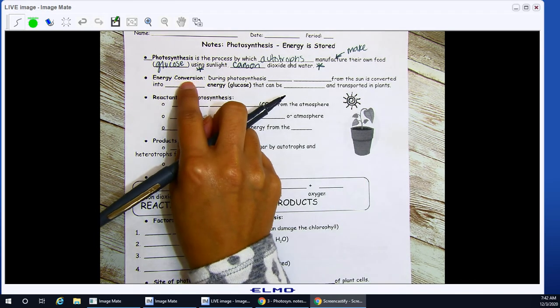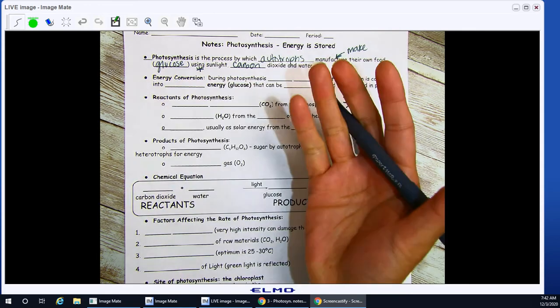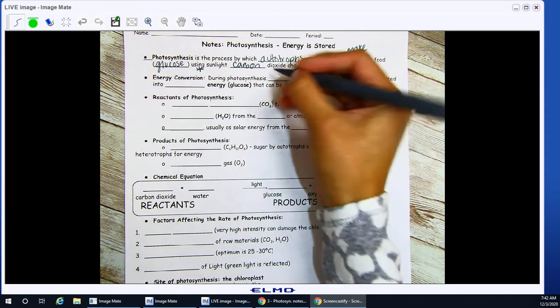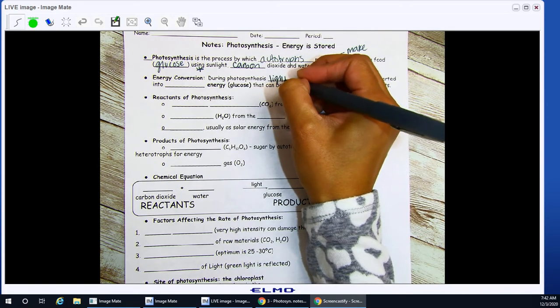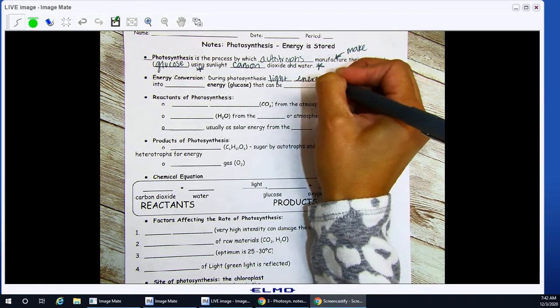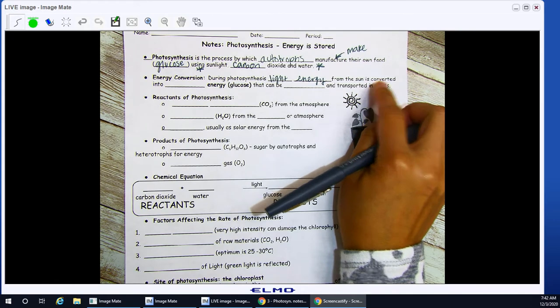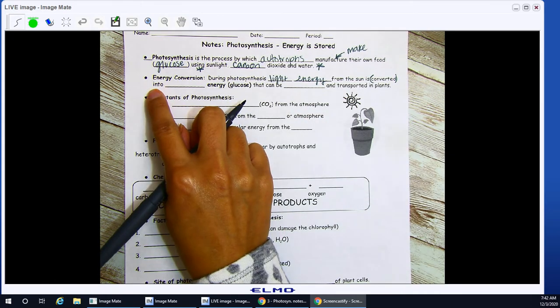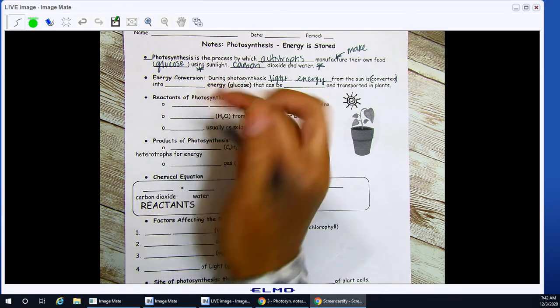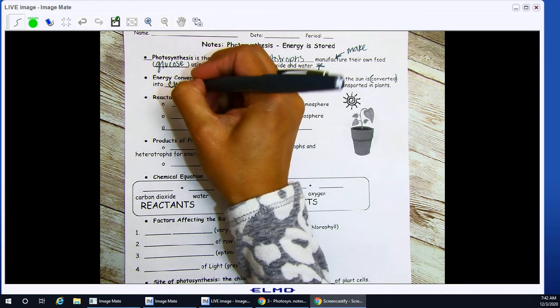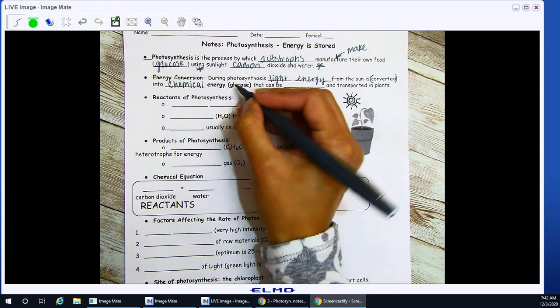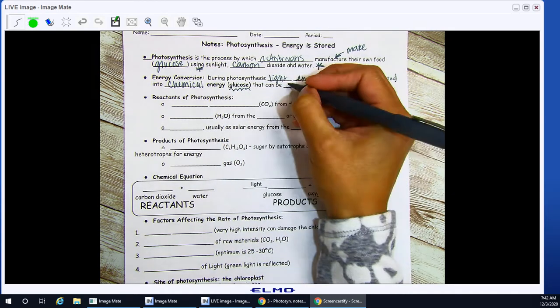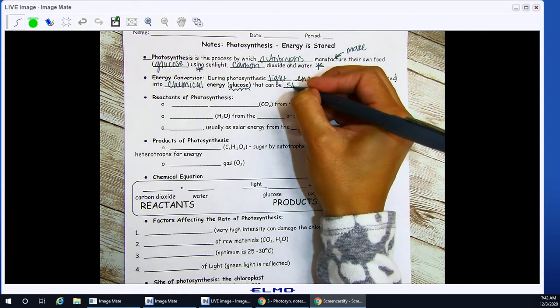Energy conversion. To convert something is to change it. During photosynthesis, light energy from the sun is converted or changed over into chemical energy, which is your glucose, that can now be stored and transported in plants.